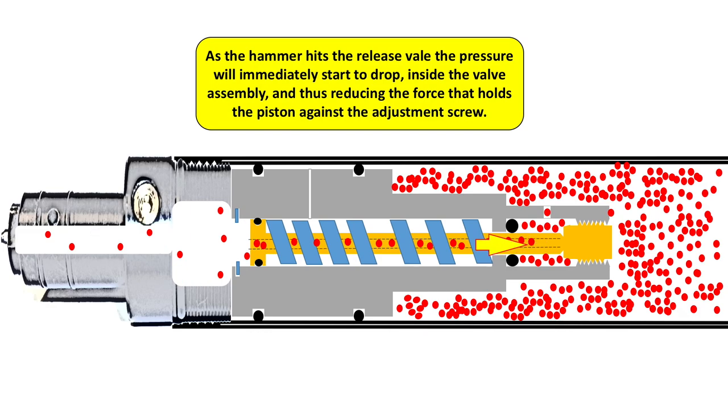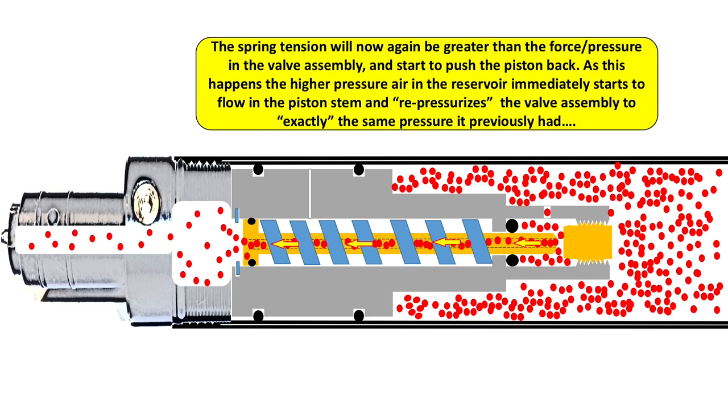So this is until you pull the trigger. And as the hammer hits the release valve, the pressure will obviously immediately start to drop inside the valve assembly. And when the pressure drops in the valve assembly, immediately the spring tension will now again be greater than the force of the pressure in the valve assembly, and obviously it will then start to push the piston back.